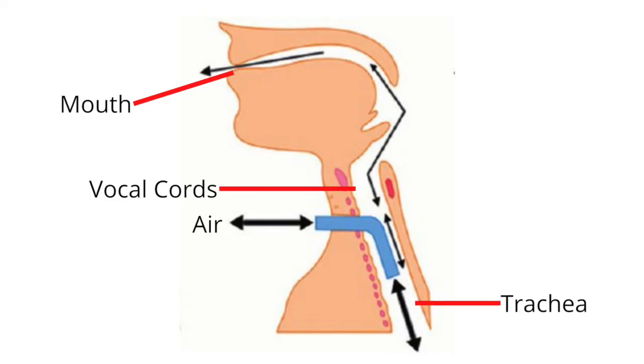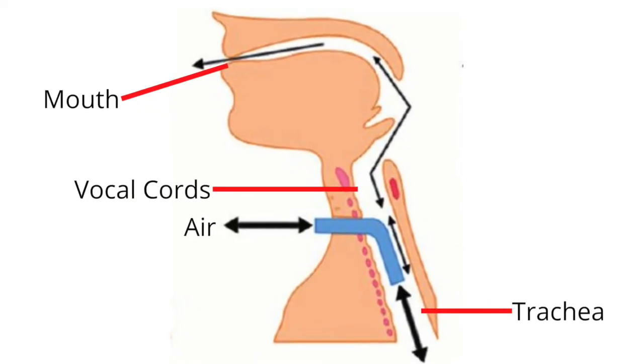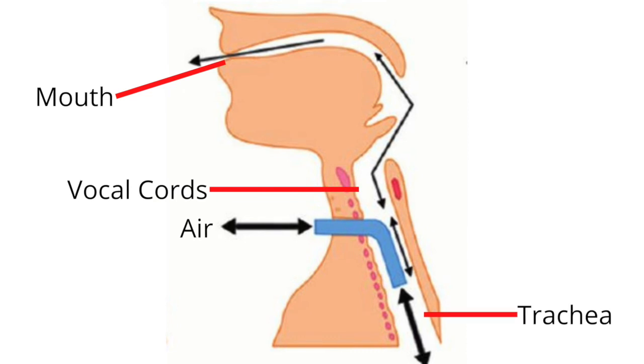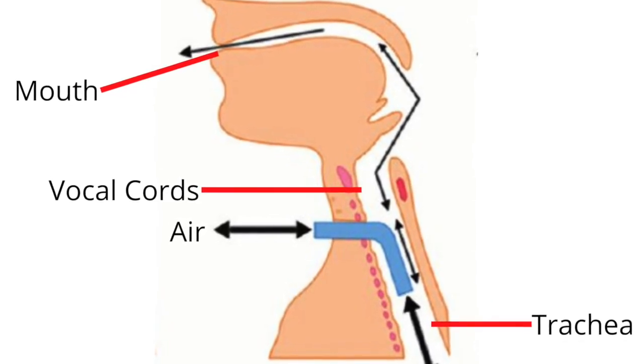When getting a tracheostomy tube, a person may lose their ability to speak. A tracheostomy tube will require a person to use different muscles to force air up through the vocal cords. Some people are able to speak again quickly, while others never regain the ability to speak.